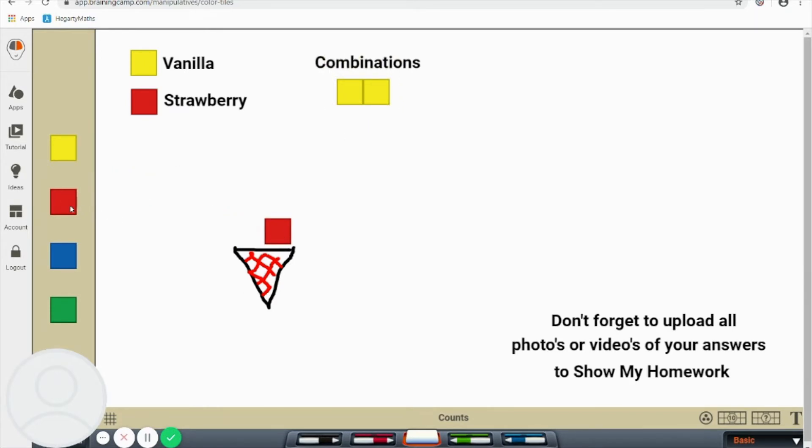I could also have a scoop of strawberry and a scoop of strawberry. And that is my second combination. And finally, I could have a scoop of vanilla and a scoop of strawberry. The key thing with this one is that a scoop of vanilla and a scoop of strawberry is the same as having it the other way around. So that's only one combination.